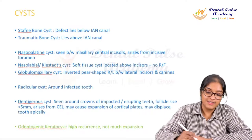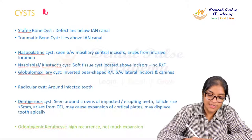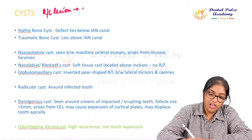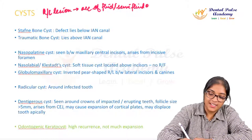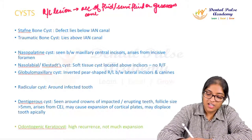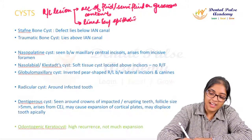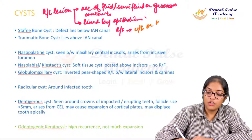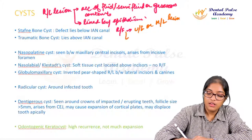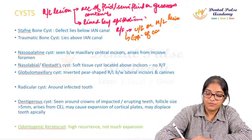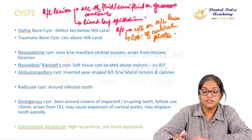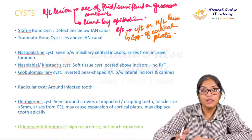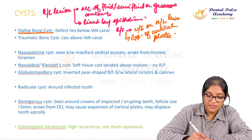Starting with cysts: a cyst is a fluid-filled, basically radiolucent lesion due to accumulation of fluid, semi-fluid, or gaseous contents. It is generally lined by epithelium and seen radiographically as a unilocular or multilocular lesion with expansion of cortical plates. Some show characteristic signs. Cysts are classified as odontogenic or non-odontogenic; within odontogenic, they may be developmental or inflammatory.